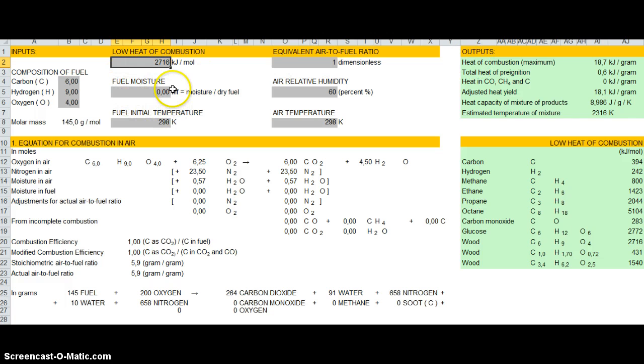So we are working with dry fuel now. And we can compute heat of combustion which is 18.7 kJ per gram.